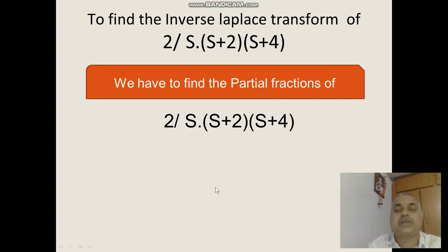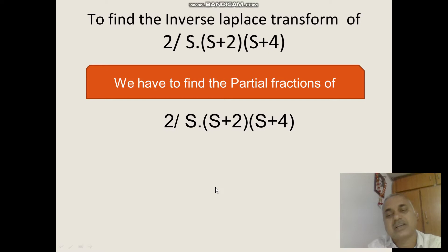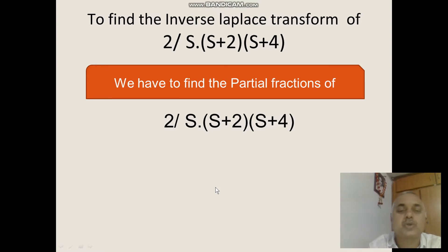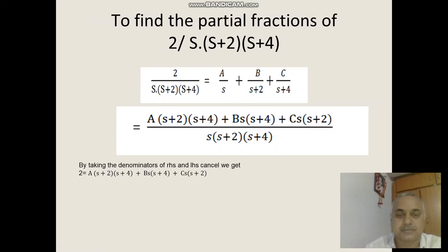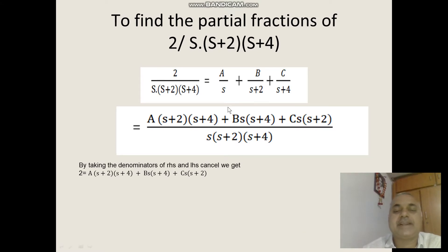We need to find the inverse Laplace transform of 2 by s into s plus 2 into s plus 4. We have to find partial fractions first. So 2 by s into s plus 2 into s plus 4 is equal to A by s plus B by s plus 2 plus C by s plus 4.